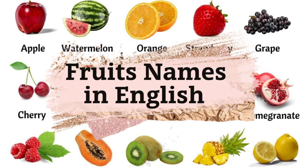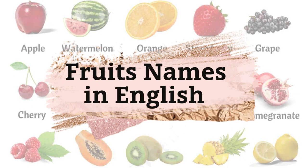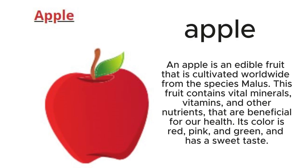Fruits names in English. Apple: An apple is an edible fruit that is cultivated worldwide, from the species Malus. This fruit contains vital minerals, vitamins, and other nutrients that are beneficial for our health. Its color is red, pink, and green, and has a sweet taste.